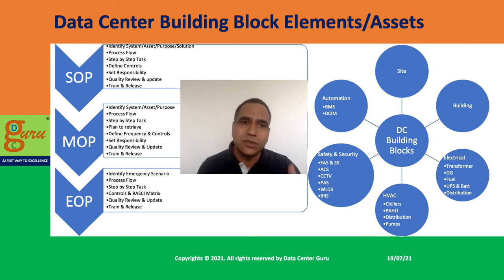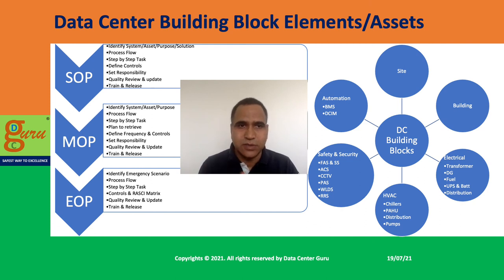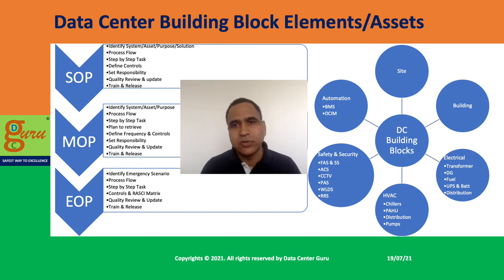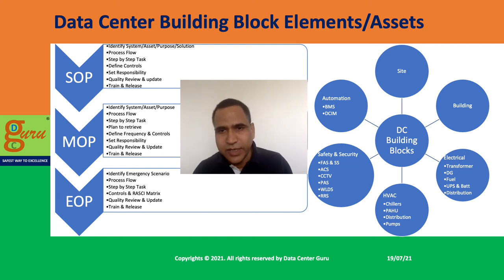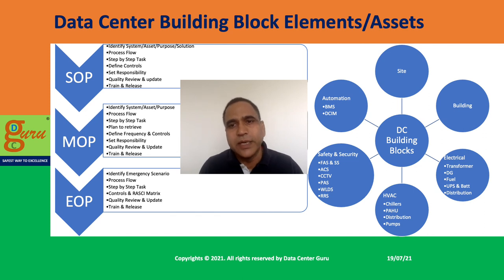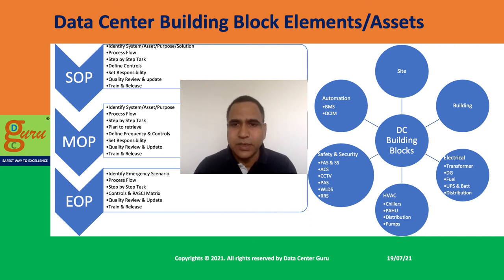Similarly you develop MOPs — find asset, system, purpose, then create the process flow step by step. Here also plan a return path, because whenever you are doing maintenance, each activity has an expected outcome. You check whether you are getting that outcome; if not, follow plan B and retrieve. You need to recheck the system before doing the maintenance again — otherwise you invite the risk of outage in your data center.